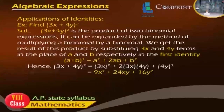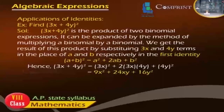Application of Identities. Example 1: Find (3x plus 4y)². Solution: (3x plus 4y)² is the product of two binomial expressions. We substitute A equals 3x and B equals 4y into Identity 1: (A plus B)² equals A² plus 2AB plus B². Hence, (3x plus 4y)² equals (3x)² plus 2 × 3x × 4y plus (4y)², which equals 9x² plus 24xy plus 16y².